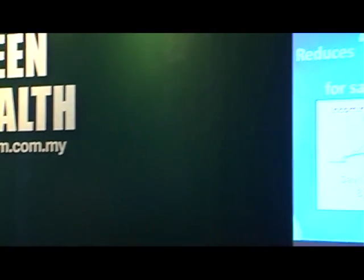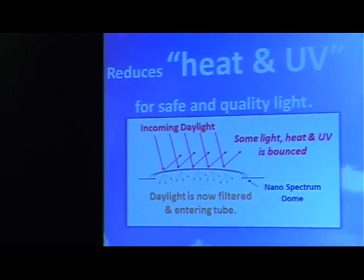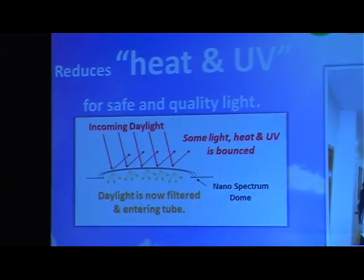The dome itself, at the first stage, reduces heat and UV for safe, quality light. Incoming daylight bounces off some heat and UV, then takes just the daylight — now refiltered — entering the tube. This is the beginning of the story of how the daylight comes in.